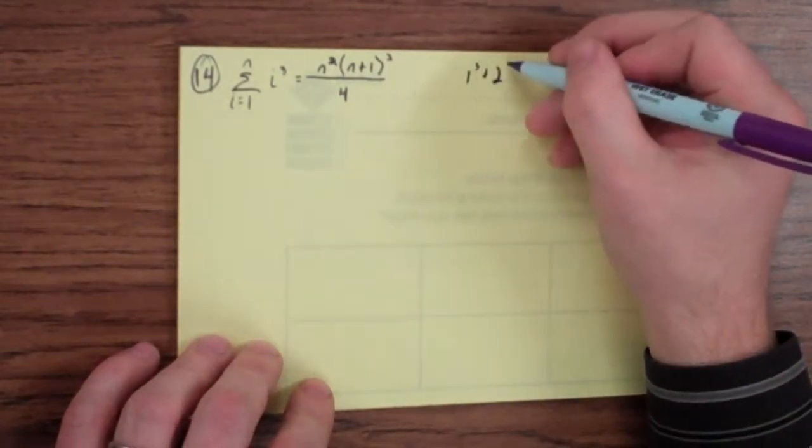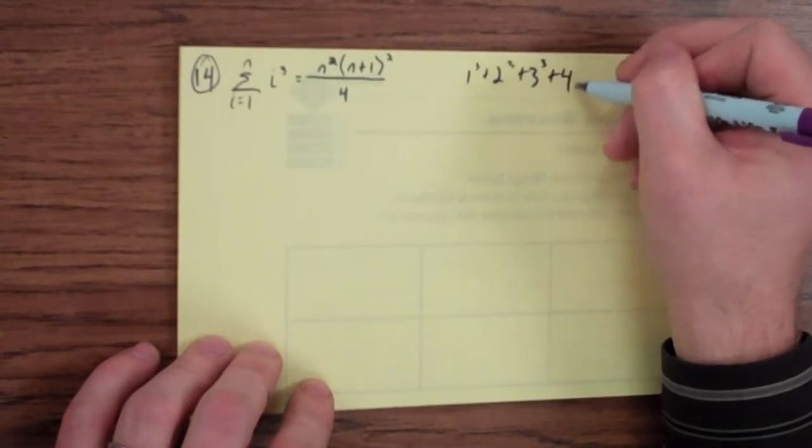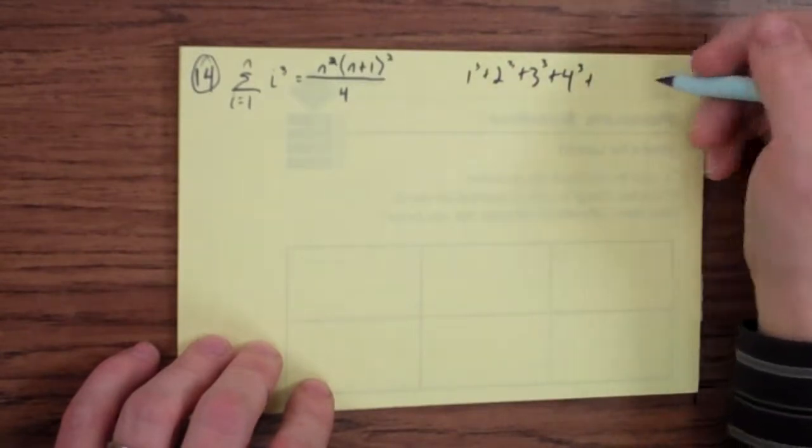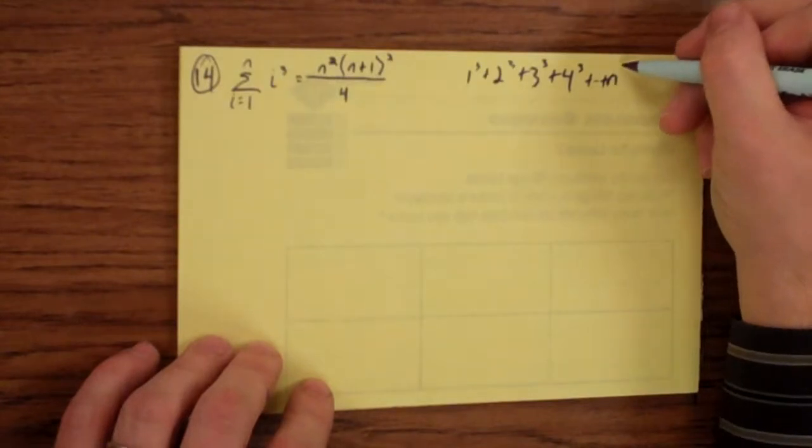1 cubed plus 2 cubed plus 3 cubed plus 4 cubed plus, on and on and on, plus n cubed.